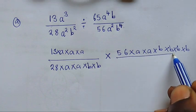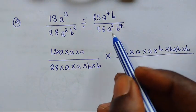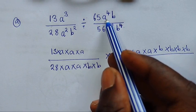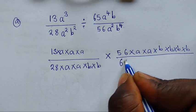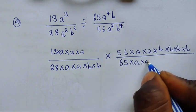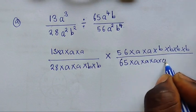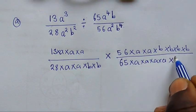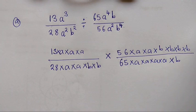Then from here the denominator will be 65 × a × a × a × a (since a is raised to the power 4) × b. I hope you have gotten this principle. Now upon doing this, we can start to eliminate — cancelling numbers and letters.